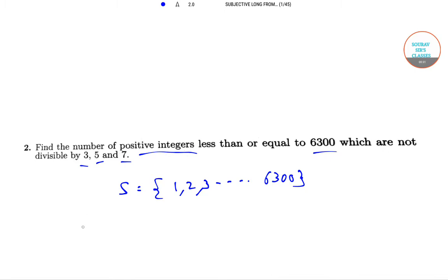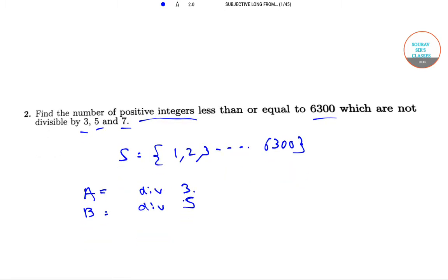Now, let us denote A as the set of integers divisible by 3, B as the set of integers divisible by 5, and C as the set of integers divisible by 7.